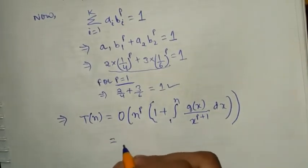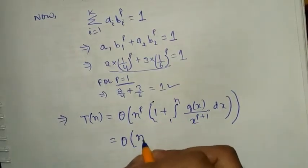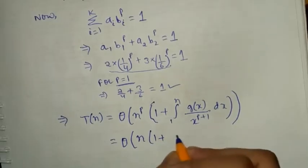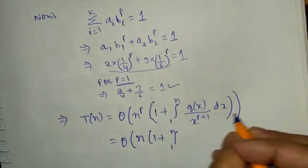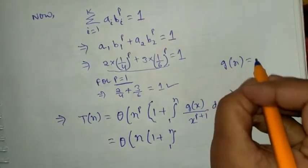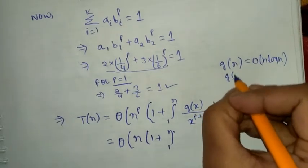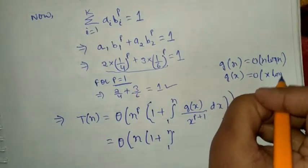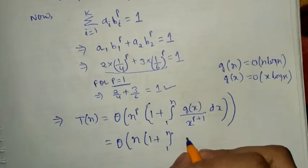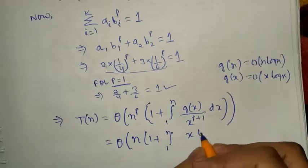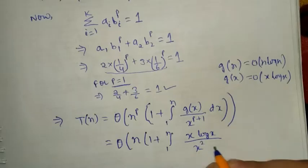Now we put in the values. p is 1, so this becomes Theta of n times the quantity 1 plus the integral from 1 to n of g(x) over x^2 dx. Since g(n) is of order n log n, g(x) is of order x log x. Substituting, we get x log x divided by x squared, which simplifies to log x over x, inside the integral from 1 to n.